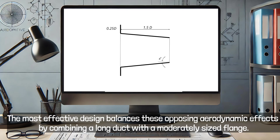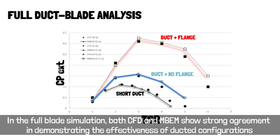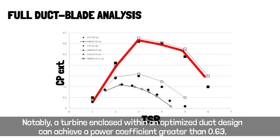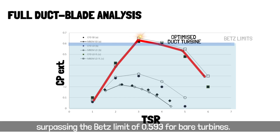The most effective design balances these opposing aerodynamic effects by combining a long duct with a moderately sized flange. In the full blade simulation, both CFD and MBM show strong agreement in demonstrating the effectiveness of ducted configurations, with enhanced static pressure recovery and reduced back pressure significantly improving turbine performance. Notably, a turbine enclosed within an optimized duct design can achieve a power coefficient greater than 0.63, surpassing the Betz limit of 0.593 for bare turbines.